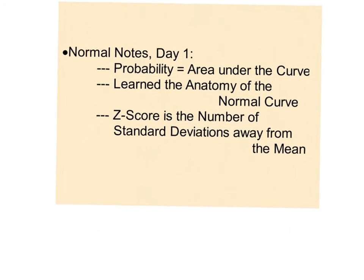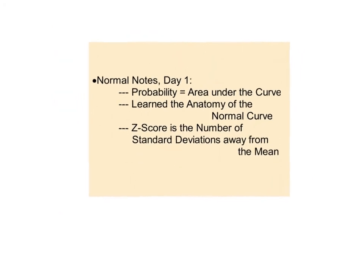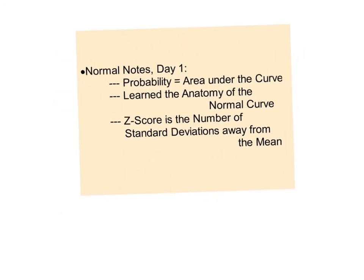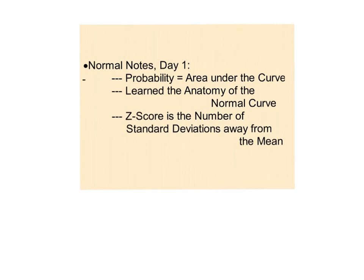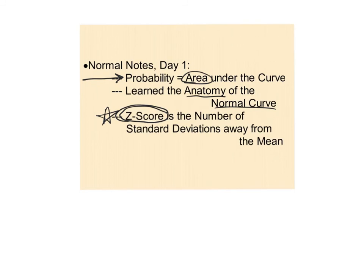Today we're going to talk about how to get probability, and probability is going to be the area under the curve. If I want to find the probability of something, I want to find how much area there is — that represents the likelihood of getting that value. We'll learn the anatomy of the normal curve and what a z-score is. A z-score is how many standard deviations you are away from the mean.